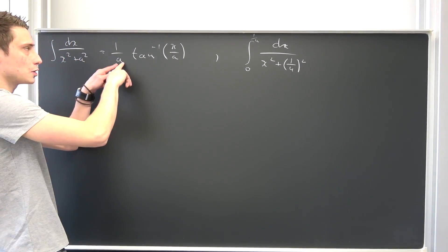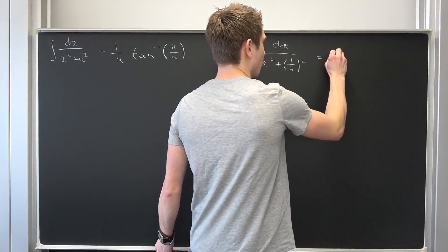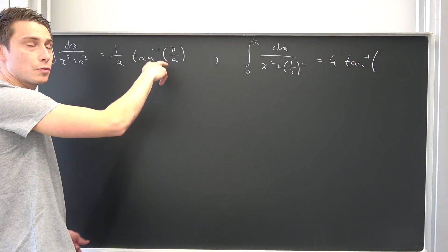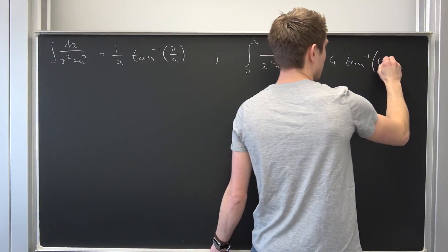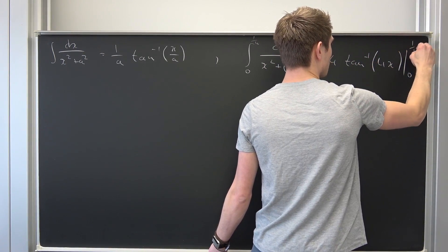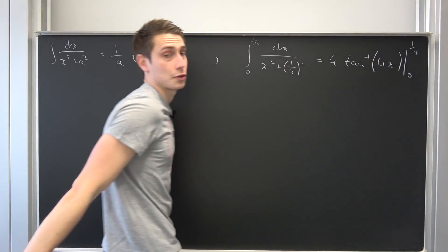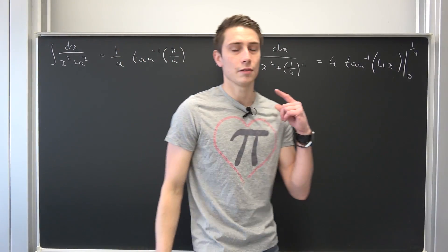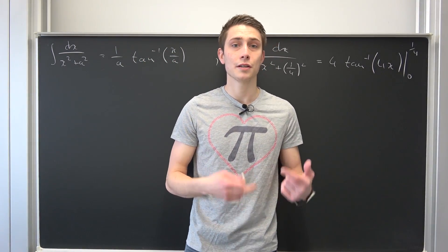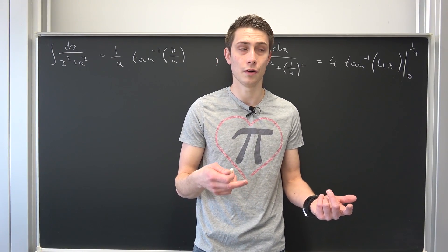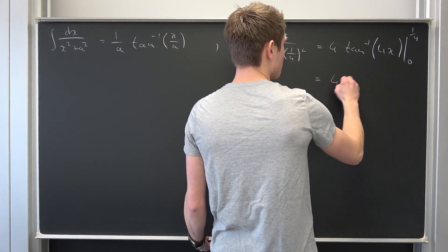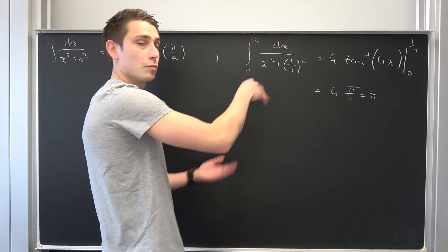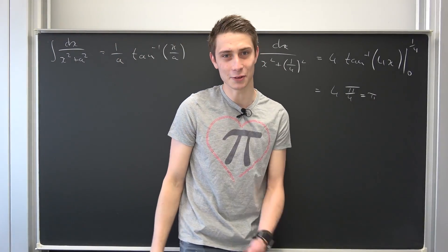We can plug the stuff in. The reciprocal of 1/4 is nothing but 4, and then we are going to get the inverse tangent of x over 1/4, which is 4 times x, from 0 to 1/4. Inverse tangent of 0 is just 0. If you plug in 1/4 that's the inverse tangent of 1, which equals pi/4. So we get 4 times pi/4, which is nothing but pi. We've found an integral representation of pi.